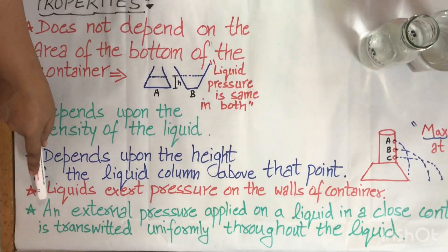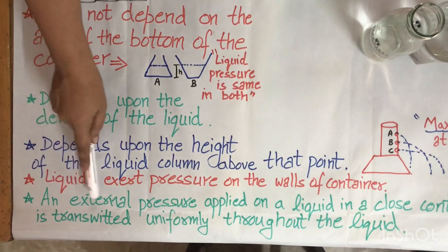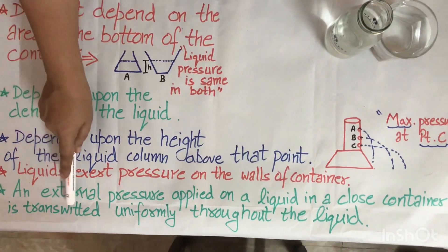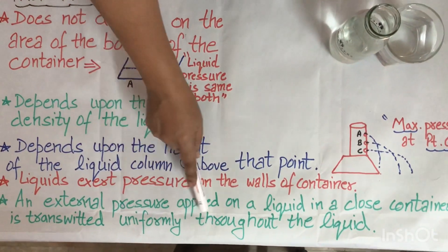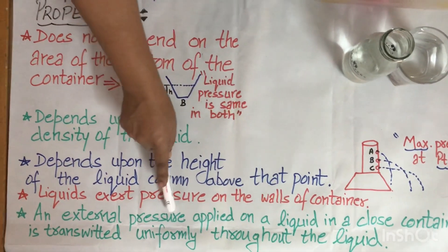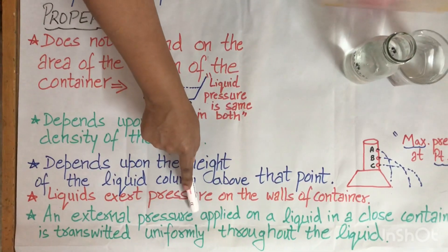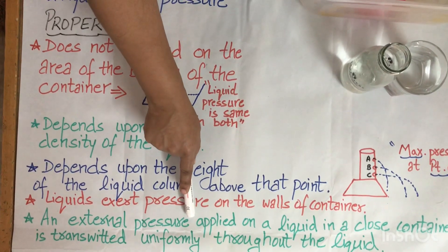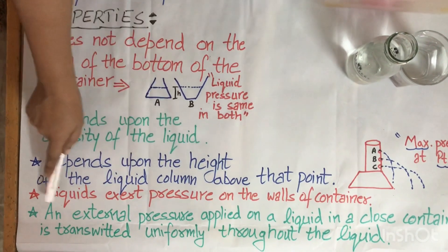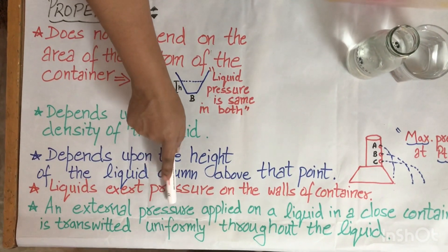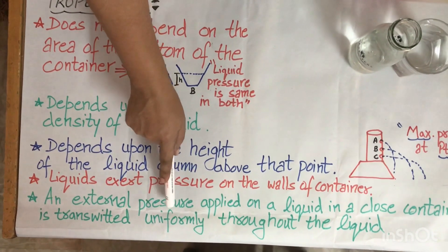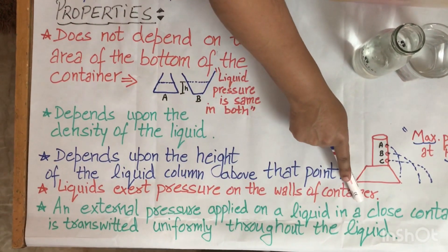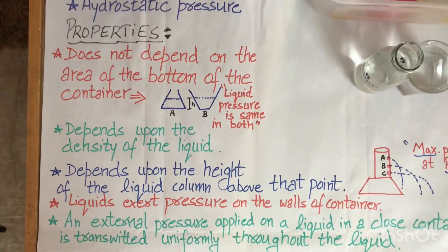The last property is that if we apply any external pressure on a liquid in a closed container, it is transmitted uniformly throughout the liquid. That is why if you apply pressure on a water-filled balloon, it is transmitted equally in all directions throughout the balloon. These are the properties of liquid pressure.